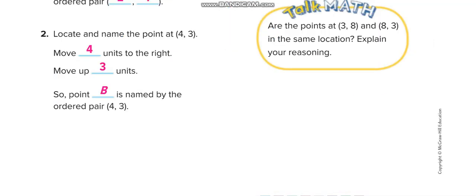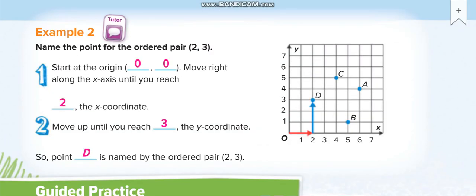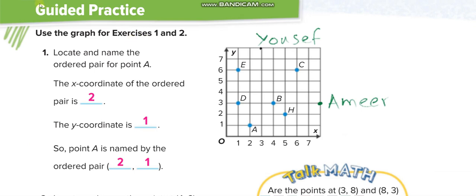Name the point for the ordered pair (2, 3). First, we see down here where's 2, and 3 on the Y-axis. They are meeting at this point: down 2 and left 3. That's point D.